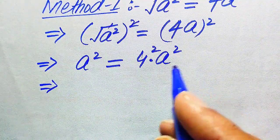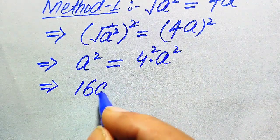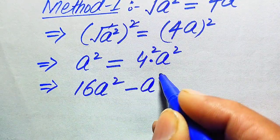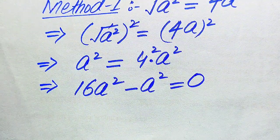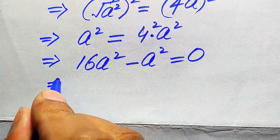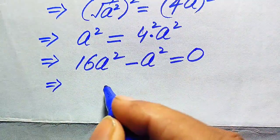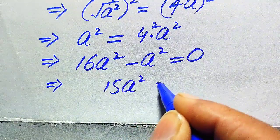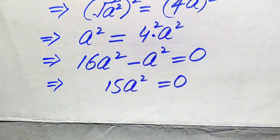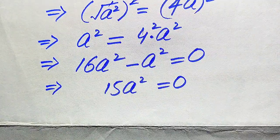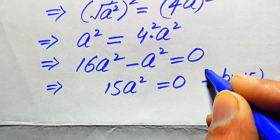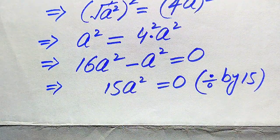It becomes 4² multiplied by a², which is 16a². Now we move the a² from the left-hand side to the right-hand side, so it becomes minus a². The equation becomes 16a² − a² = 0, which simplifies to 15a² = 0. Our target is to find the values of a, so we divide both sides by 15.